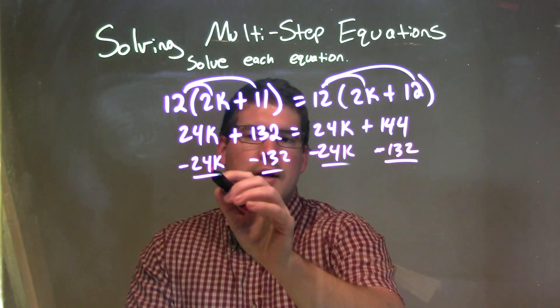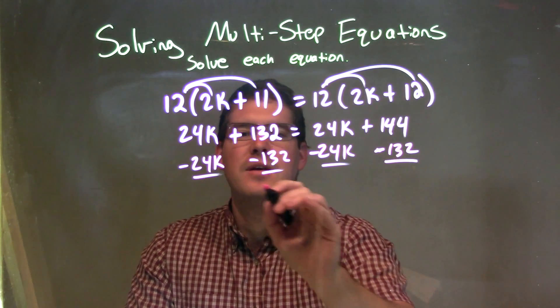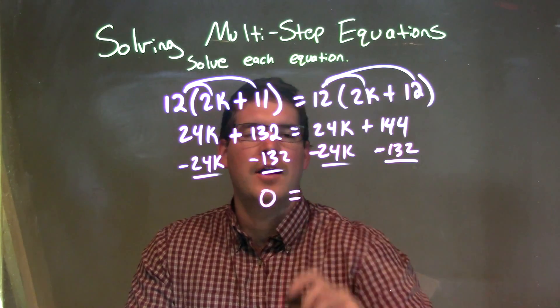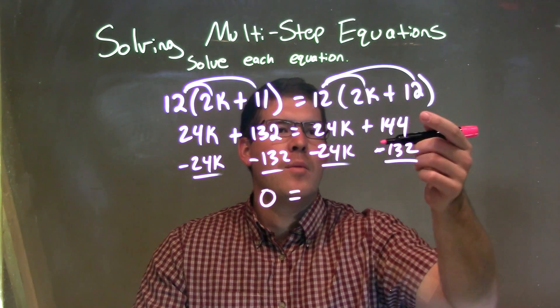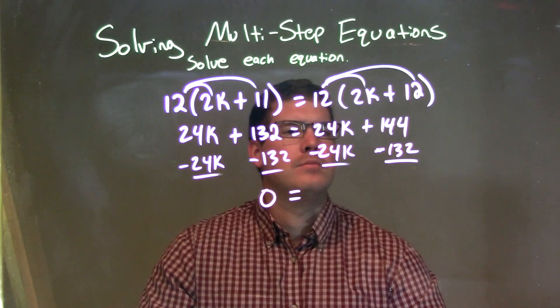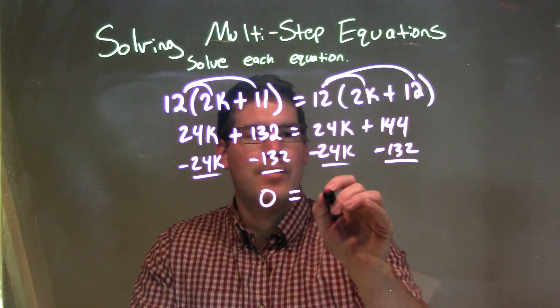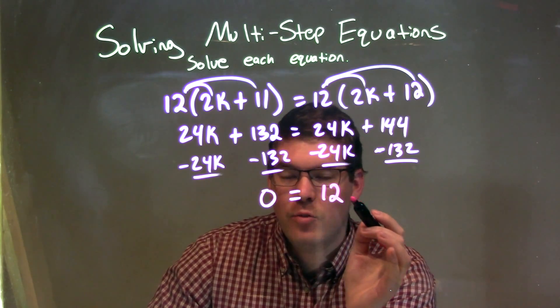I'm left now with 24k minus 24k, and 132 is 0. So there's a 0 on the left-hand side, and the right-hand side, 24k minus 24k eliminates, which is 0. But 144 minus 132 is 12. We have a positive 12 here. So now we have 0 equals 12.